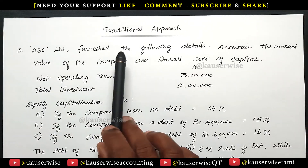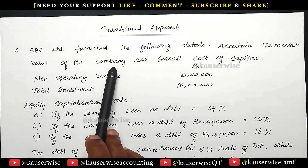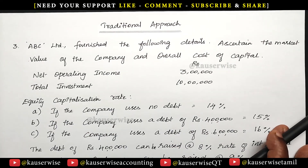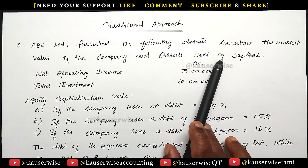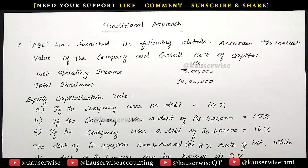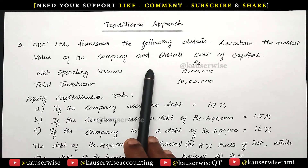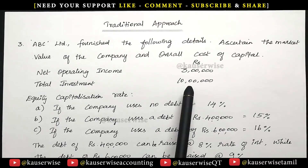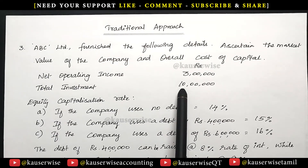ABC Limited furnishes the following details. Ascertain the market value of the company and overall cost of capital. We are going to find out V, that is the value of the company, and KO, the overall cost of capital, with the available information. The net operating income, that is EBIT, is 3 lakhs and total investment is 10 lakhs, so the total capital structure of the company is 10 lakhs.